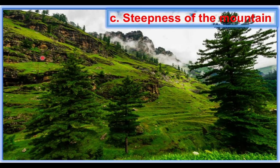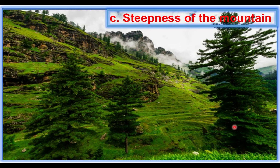The steepness of a mountain also influences the distribution of vegetation. Steep mountain slopes allow runoff water, which carries away the topsoil. Because topsoil is removed, these areas cannot support vegetation and are poorly vegetated. However, valley and plain areas support the growth of vegetation.